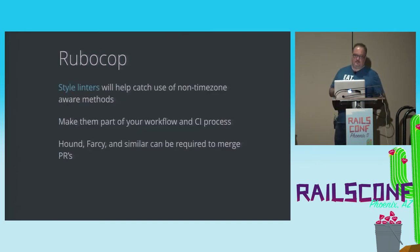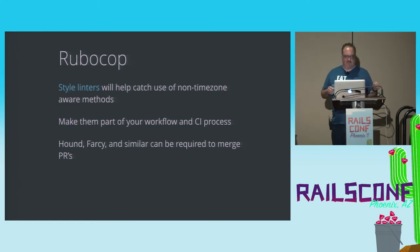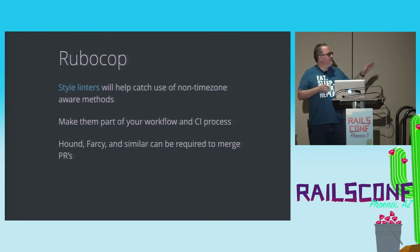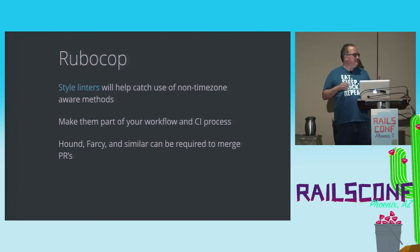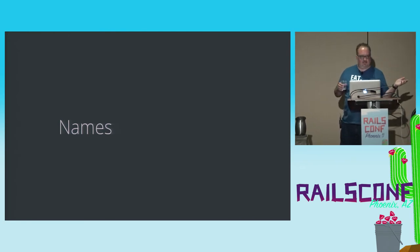Something that can help you with this: who uses RuboCop? How many put it into your actual process formally? There are services like Hound, Farsci, Codacy, and probably others that you can make a blocker, so you can't merge a PR unless it passes your style check. Amongst the many benefits of that, RuboCop will actually catch some of these errors for you.